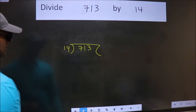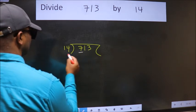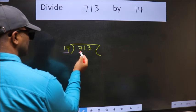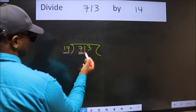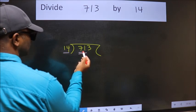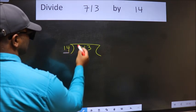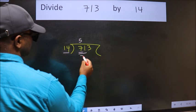Next. Here we have 7. Here 14. 7 is smaller than 14. So we should take two numbers, 71. A number close to 71 in 14 table is 14 fives, 70.